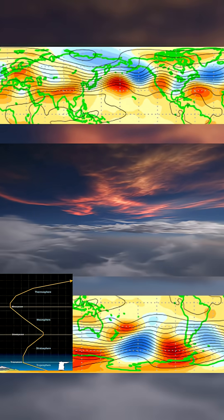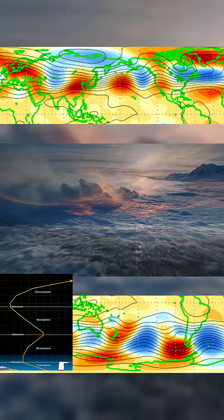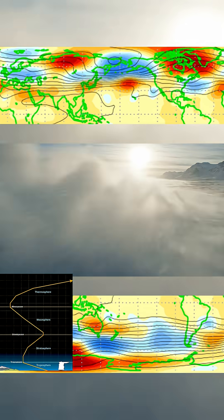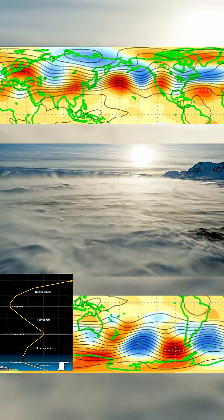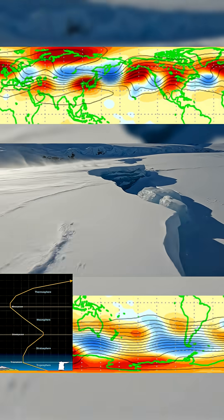That's the start of a sudden stratospheric warming event, and it's happening nearly six weeks earlier than normal. At 10 hectopascals, zonal winds that normally race west to east are losing strength.